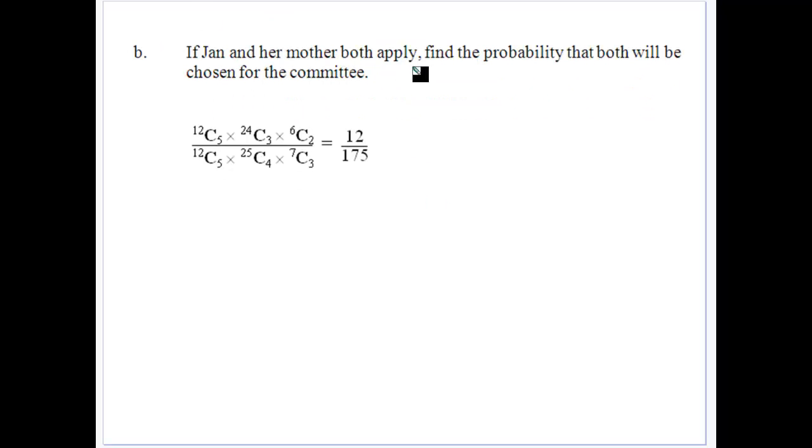If Jan and her mother both apply, what's the probability they're both chosen for the committee? Well, that means that you still have any amount of teachers you like, but there's one less student and one less place. So you're looking for groups of three that will be able to go with Jan out of the 24 remaining students, and the groups of two parents out of the six remaining parents that will go with Jan's mother. Because Jan and her mother are both on the committee. So that's why it's 24C3, 6C2 over the total amount of combinations gives us a 12 in 175 chance.